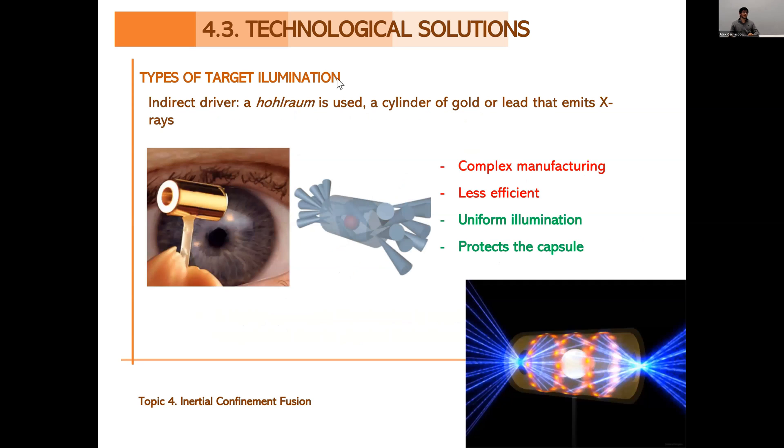And with indirect drive, we resolve this problem. Indirect drive is when a laser shines on what we call a Hohlraum and it is a cylinder of gold or lead. So a high Z number material that when the laser shines on the cylinder, this cylinder emits x-rays that then shine on the capsule. As we can see in the picture in the bottom, in the bottom of the screen, the laser goes in, shines on the cylinder and the cylinder emits x-rays that shine on the capsule and produce fusion.